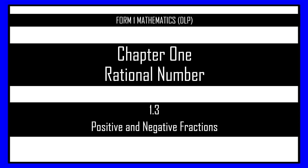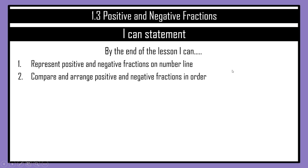Welcome to Form 1 Mathematics, DLP, Chapter 1: Rational Numbers, Subtopic 1.3, Positive and Negative Fractions. In this lesson, you will learn how to represent positive and negative fractions on a number line, and you will also compare and arrange positive and negative fractions in ascending and descending order.